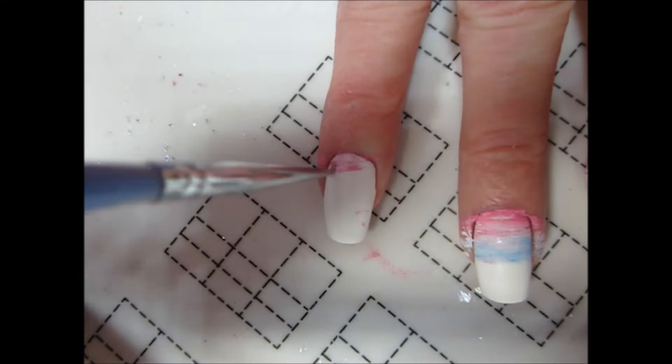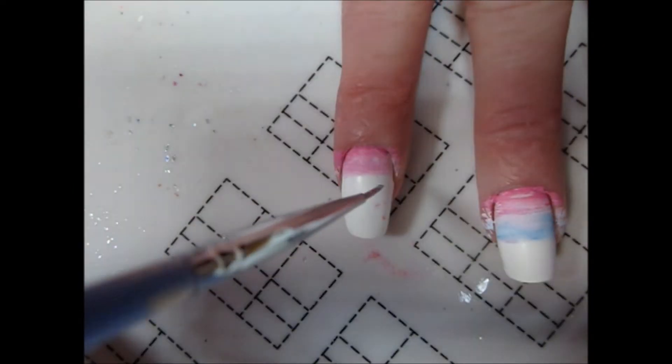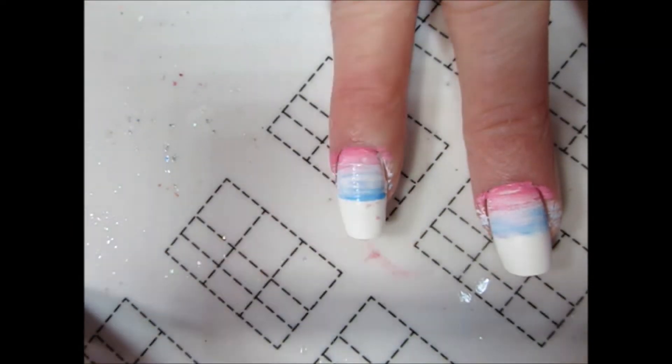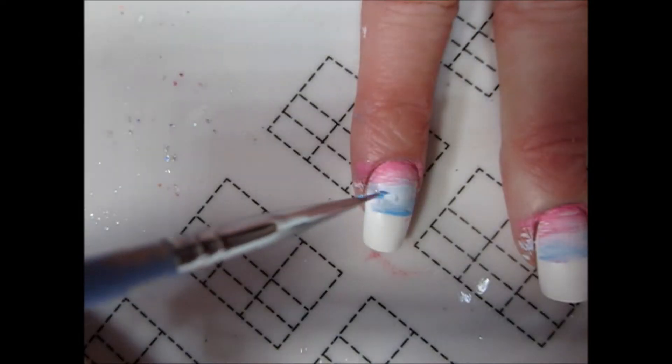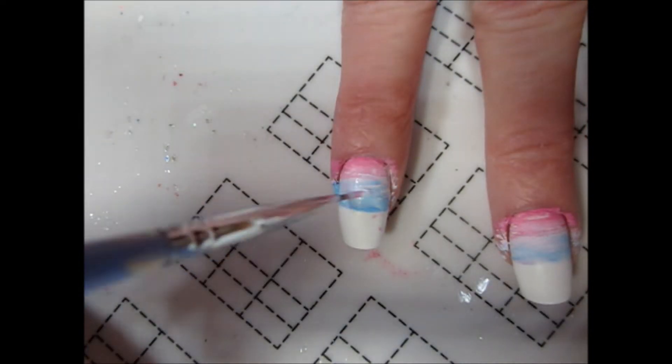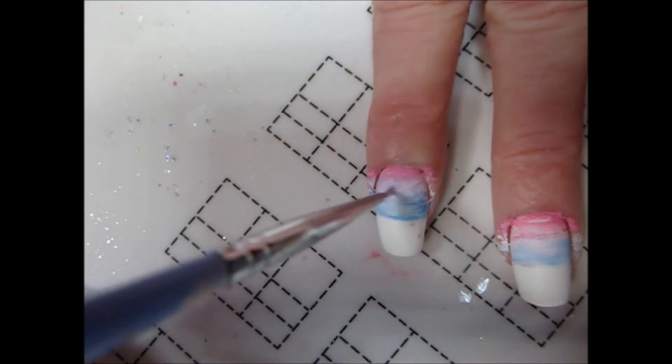I allowed the polish to dry completely before starting to paint the landscape. I began with the sky using a thin brush to add back and forth strokes of medium pink acrylic paint to the uppermost part of my nail. I then blended in a lighter pink and two shades of blue. I continued blending in the colors until I was satisfied and then repeated the process on the rest of my nails.